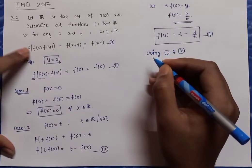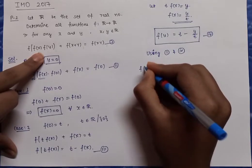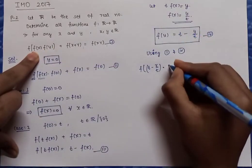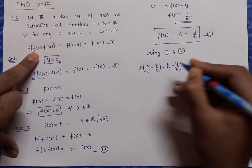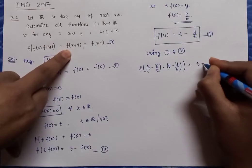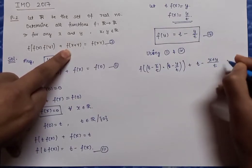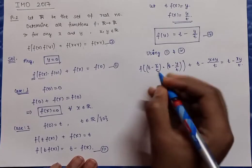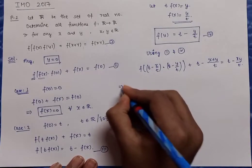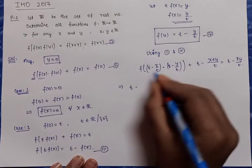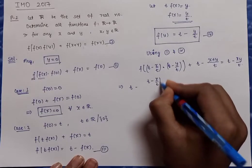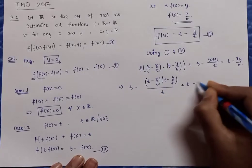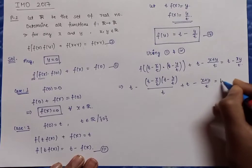To determine t, I substitute the function f(y) = t − y/t back into the original mother equation, calling this equation 4 and using equations 1 and 4. The left side becomes: f(f(x)·f(y)) + f(x+y) = f((t − x/t)·(t − y/t)) + (t − (x+y)/t), and the right side is f(xy) = t − xy/t.